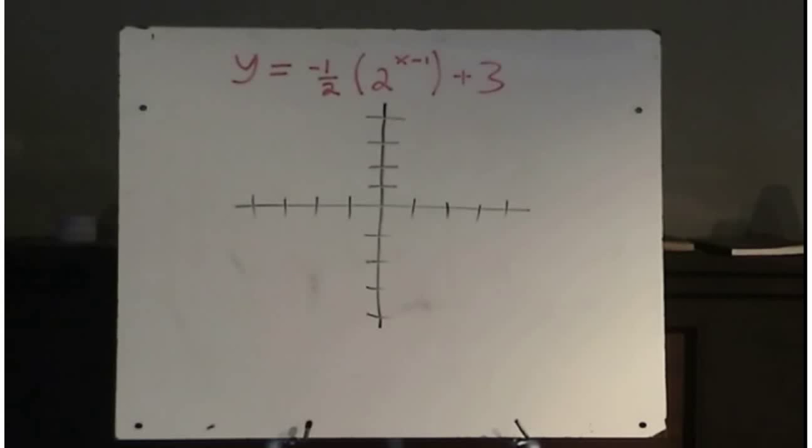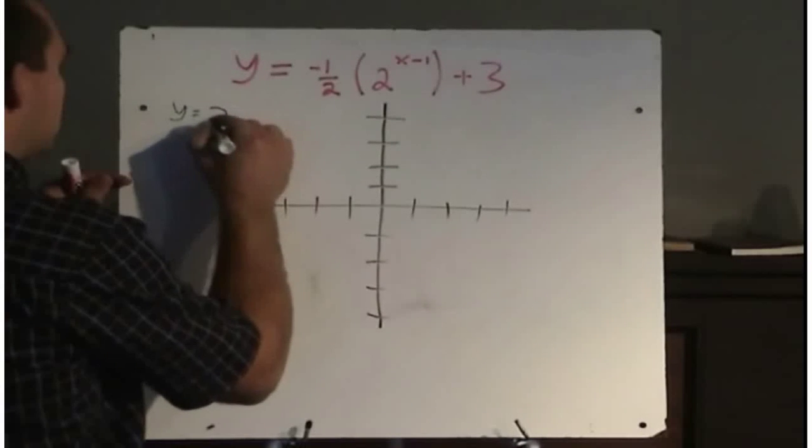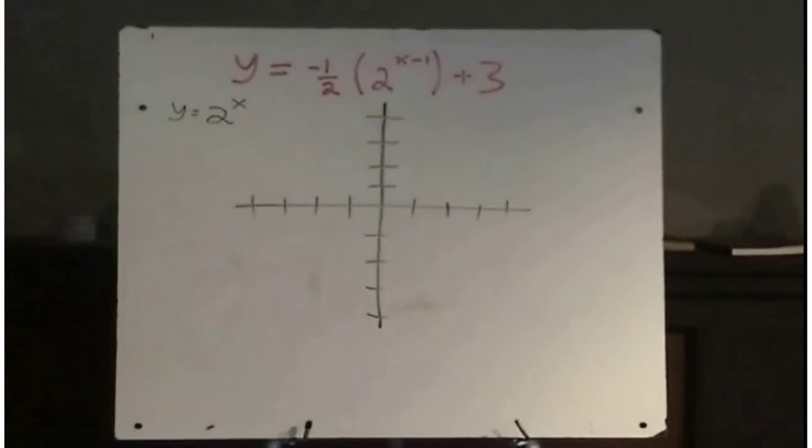So we should be able to sketch this graph because really this is just a basic exponential graph. The basic one in here is y equals 2 to the x. That's the basic exponential function in there, and all that has happened to that graph is that there has been transformations to it.